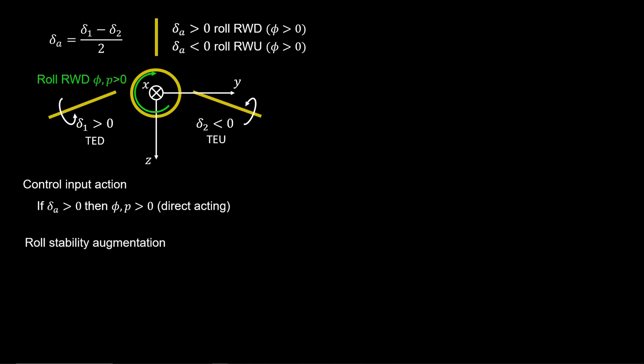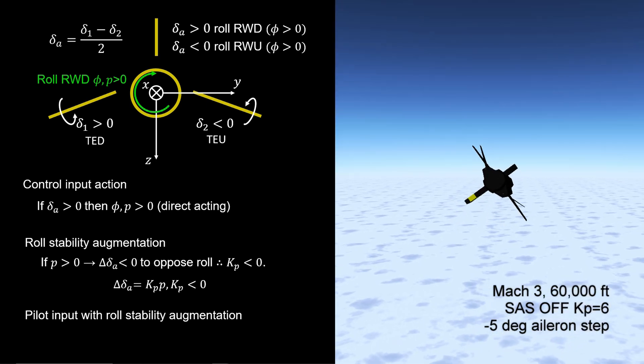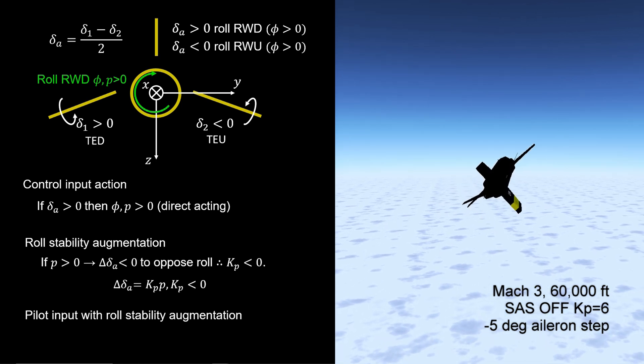Now suppose we desire to reduce the tendency to roll. Then, if roll rate is positive, we must decrease the aileron angle to oppose rolling. Thus, there is negative feedback between the measured roll rate P and an aileron decrement to reduce the total aileron value.